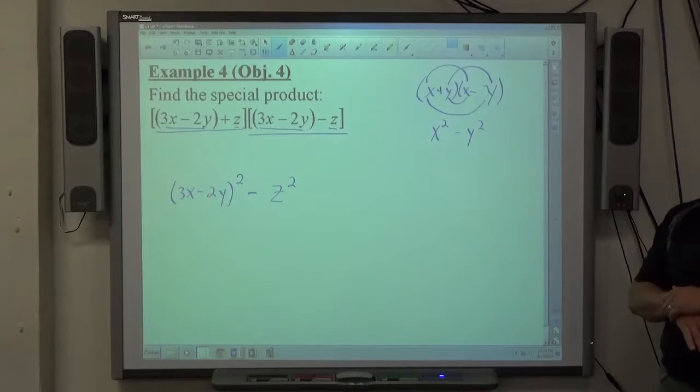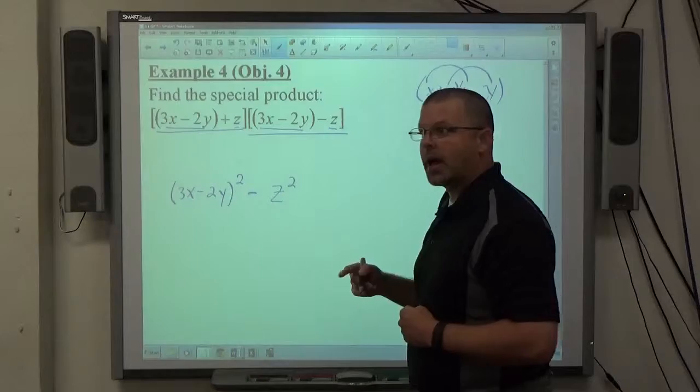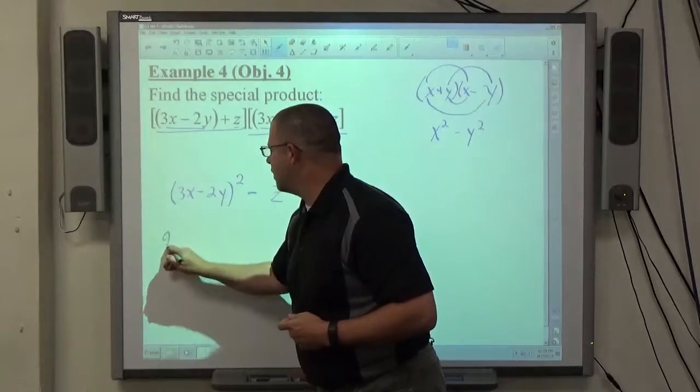Notice the first object squared is a binomial squared like we just saw a moment ago, right? So now we apply the binomial squared idea to that. Square the first object, 9x squared.